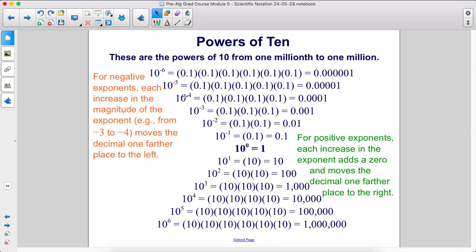For negative exponents, each increase in the magnitude of the exponent, for example moving from 10 to the negative 3rd to 10 to the negative 4th, moves the decimal one farther place to the left, so the numbers get smaller as the exponent increases.